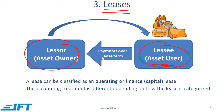If it is a three-year lease, then over a three-year period the lessee will be making payments to the lessor. A lease can be classified as an operating lease or a finance lease. In the US, the finance lease is also called a capital lease. The accounting treatment is different depending on how the lease is categorized, and we will see this later.